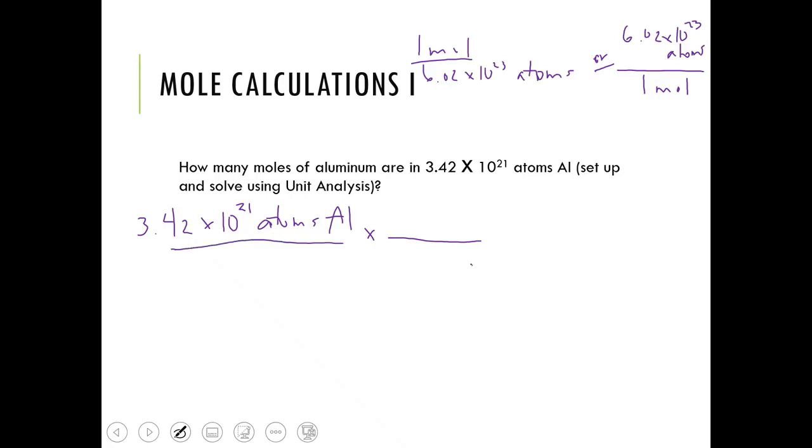So I need atoms down here. And what do I want? I want moles. What have I got? I've got atoms, right? It's what you want over what you've got. So I need to use the conversion factor that has moles on top and atoms on the bottom.